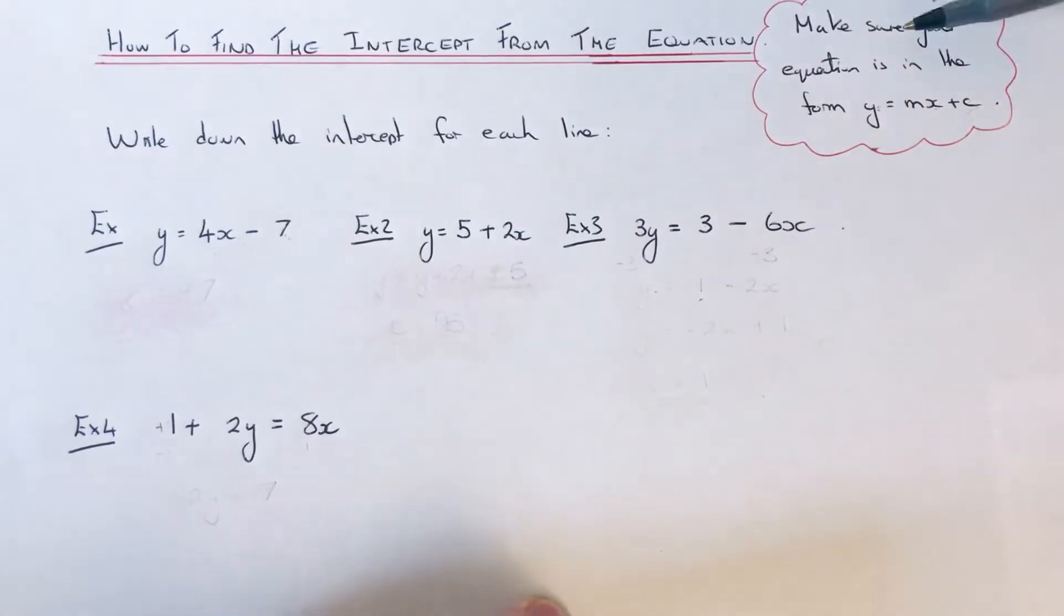To do this, you need to first make sure that the equation is in the form y equals mx plus c. You need the y at the start of the formula, and to find the intercept, which is c, you just need to look at the number at the end of your formula.